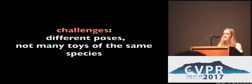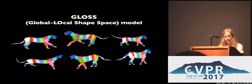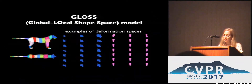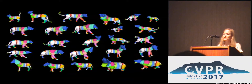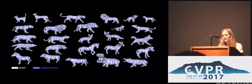Unfortunately, toys are not in the same pose, and we cannot collect many of them of the same species. To overcome the lack of samples, we built a multifamily model, and to overcome the wide difference in shape and pose, we designed a novel alignment method. The alignment is based on GLOSS — Global Local Shape-based model. GLOSS is inspired by part-based models but is global and differentiable. Starting from a template mesh, we can obtain different shapes by locally deforming the mesh parts according to synthetic deformations. We fit GLOSS to our toys, obtaining a coarse alignment, and then we refine the alignment using as-rigid-as-possible regularization.